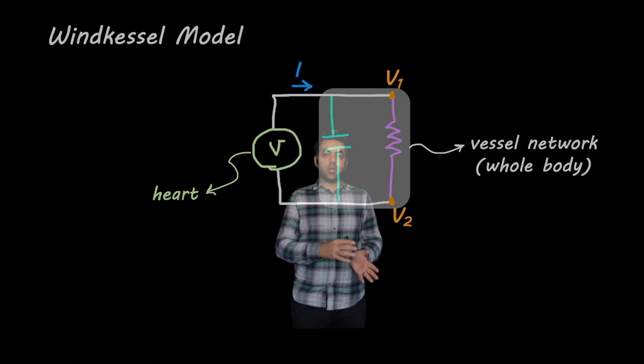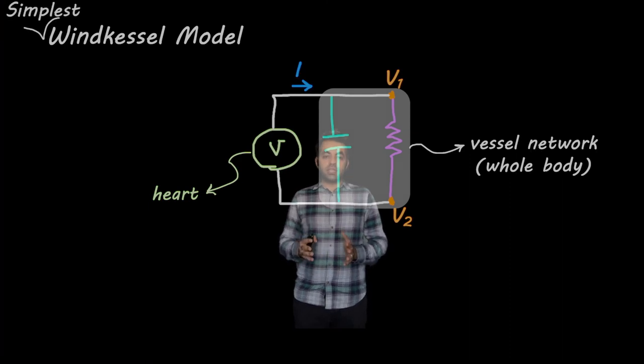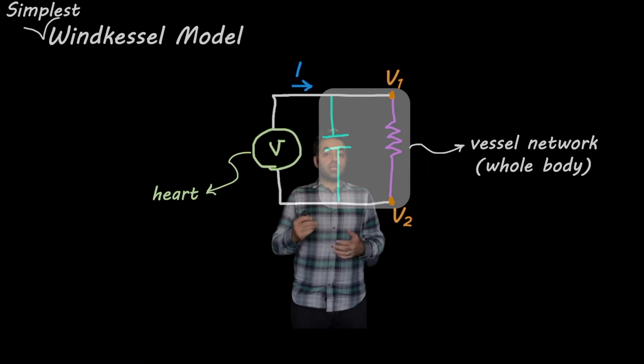which is similar to what our heart does in our cardiovascular system. So this electrical circuit consisting of these elements, especially the capacitor and resistor, this is the simplest Windkessel model that we can build.